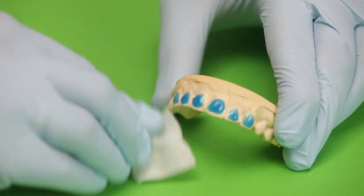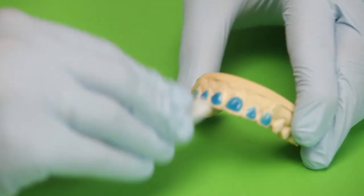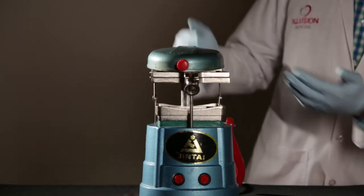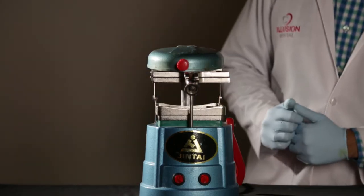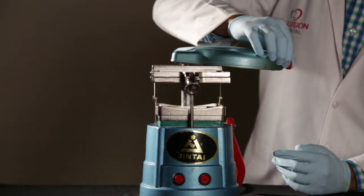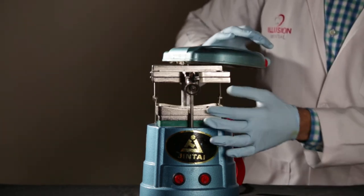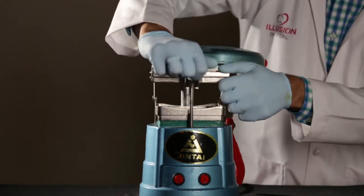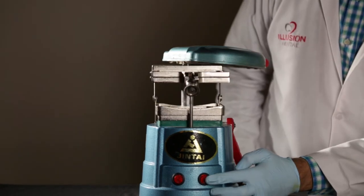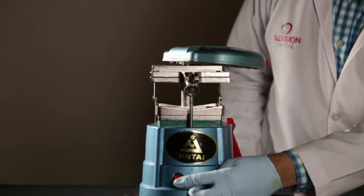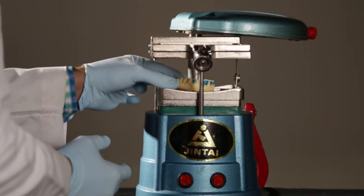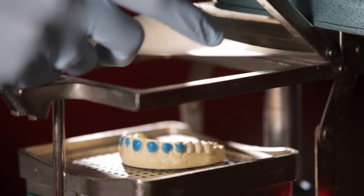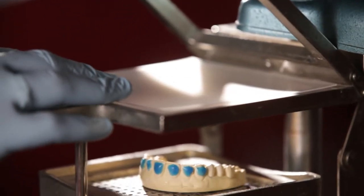Now this is what the vacuum former looks like. It has a heating unit on top and the platform where the cast will sit. It also has this frame where the bleaching sheet is positioned. It has two switches, one for the heater and one for the vacuum. We keep the model on the platform, and I've selected a soft bleaching tray sheet which I'm going to place in the frame and clamp it into place.